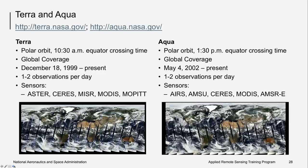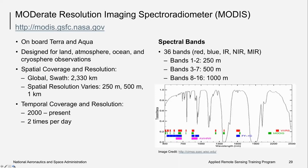The workhorse for much of ocean color remote sensing are the MODIS imagers on the Terra and Aqua satellites. Both are polar orbiting with global coverage and near-daily observations — Terra collects in the morning and Aqua in the afternoon. MODIS is the Moderate Resolution Imaging Spectroradiometer, designed for land, atmosphere, ocean, and cryosphere observations. It has a spatial resolution of 1 kilometer, though some bands sense at 250 and 500 meters. It is possible to interpolate ocean color bands to finer resolutions using SeaDAS, enabling use in coastal waters where finer spatial resolution is needed.